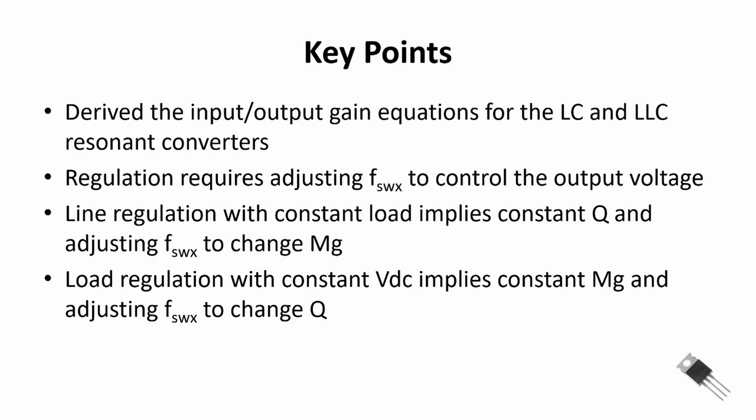Here are the key points. We derived the input-output gain equations for the series LC and series LLC resonant converters. We saw that regulation to maintain a constant output requires us to adjust the switching frequency. With line regulation, we assume that the load is constant, which implies a constant quality factor Q, and we needed to adjust the switching frequency to modify our gain. In load regulation, we assume the input VDC is constant, and therefore our gain is constant; however, we had to adjust the switching frequency to account for changes in our quality factor associated with our load. Thank you for watching.